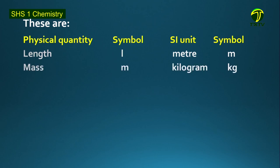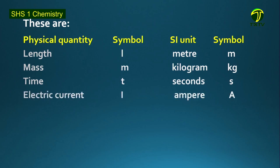We have mass. The symbol for mass is m, and the SI unit used is kilogram with the symbol kg. Then we have time with the symbol T, and we measure time in seconds with the symbol S. Then we have electric current with the symbol capital I, and the SI unit used is ampere with the symbol capital A.